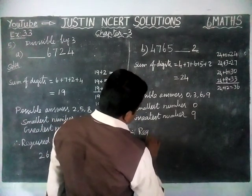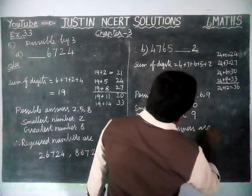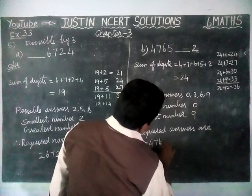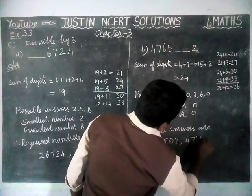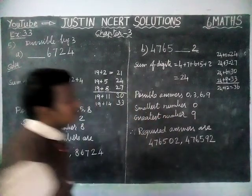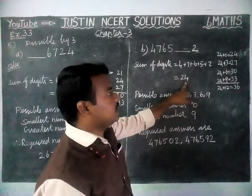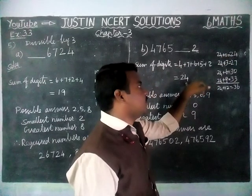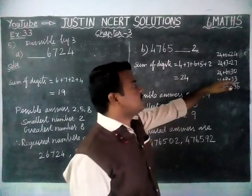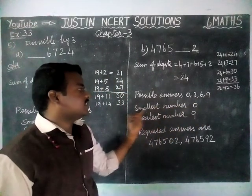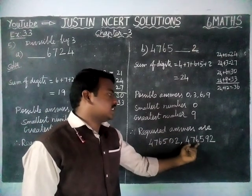Therefore, the required answers are: with the smallest digit — 4, 7, 6, 5, 0, 2 — and with the greatest digit — 4, 7, 6, 5, 9, 2. So we found that the sum of digits is 24, and 24 is already a multiple of 3. Adding 0 gives 24, adding 3 gives 27, adding 6 gives 30, adding 9 gives 33. The possible answers are 0, 3, 6, and 9. The smallest number is 0 and the greatest number is 9.